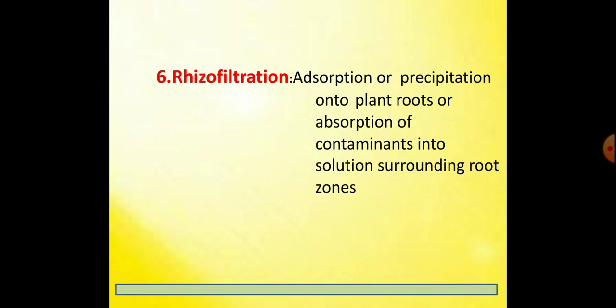The last, sixth category of phytoremediation is rhizofiltration. Here, contaminants are adsorbed or precipitated onto the plant roots, or absorbed into the solution surrounding the root zone.